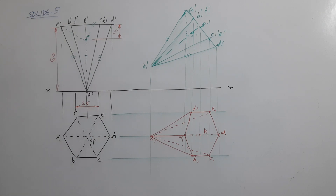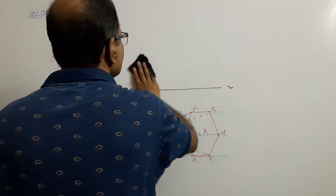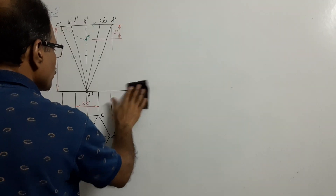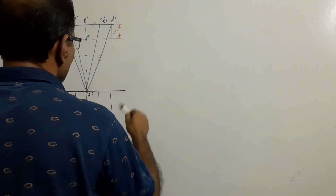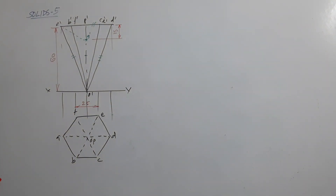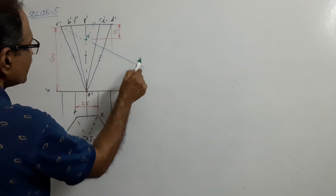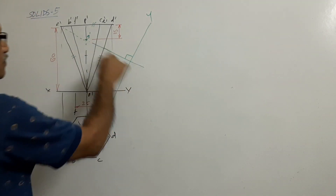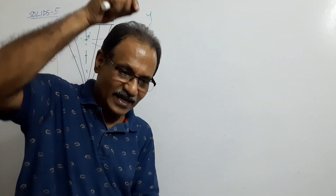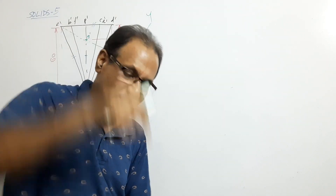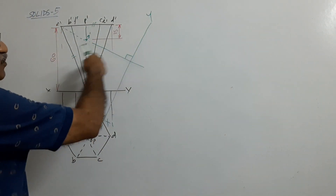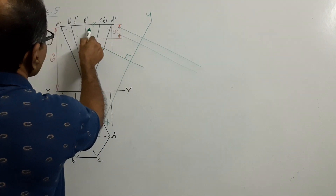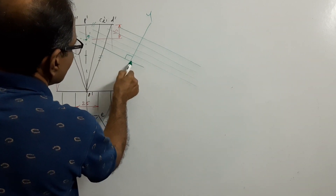Now if you go for auxiliary projection, we will not redraw it. Instead, this is xy. I extend A1 G1 and draw x1 y1 perpendicular to it. Because when it is suspended, the line connecting the center of gravity to the point of suspension will be perpendicular to the new HP. So this is the new HP — x1 y1 — perpendicular to the extension of A1 G1. Then draw a new plan by drawing projectors through all points in the elevation, perpendicular to x1 y1.